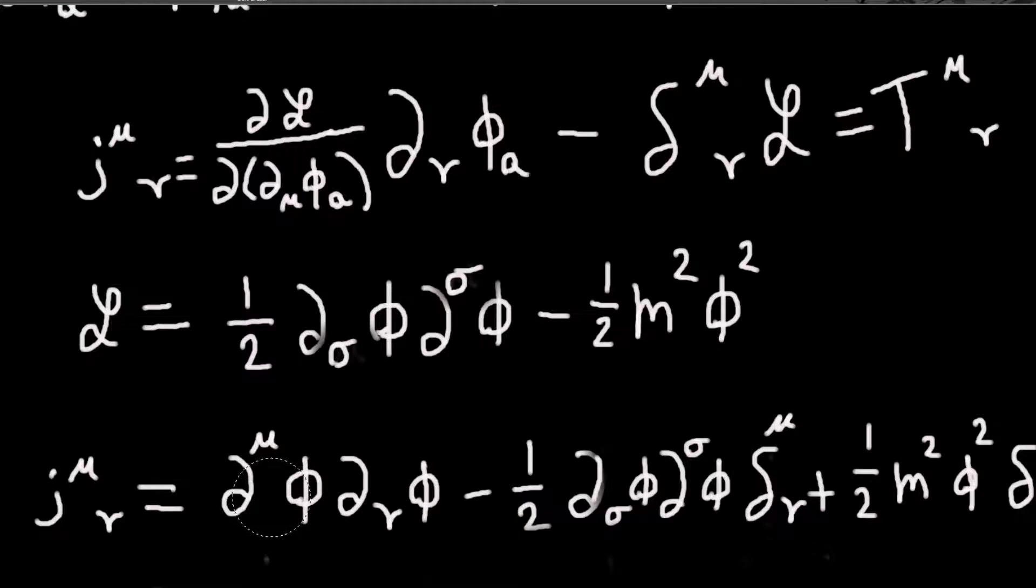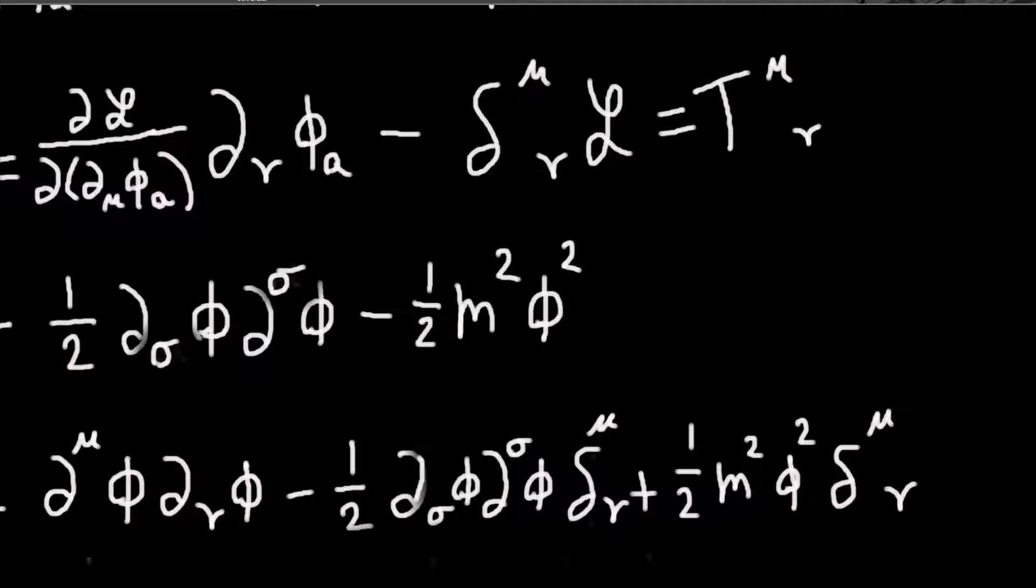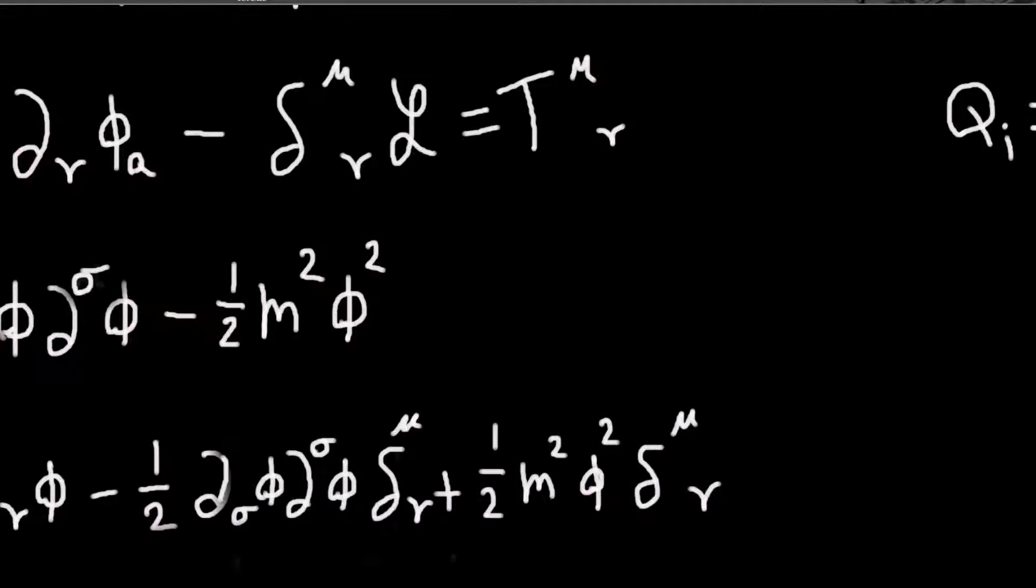So we know the derivative of this will just be d mu phi. Or mu's upper. And we just carry down our d nu phi from here. So that's that term. Is this. And then we need to do minus delta mu nu times the Lagrangian. So that's just, yeah. I just wrote it out here. So that is our conserved current.